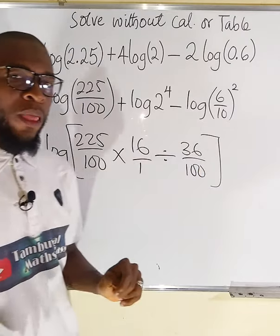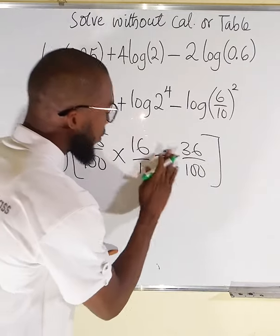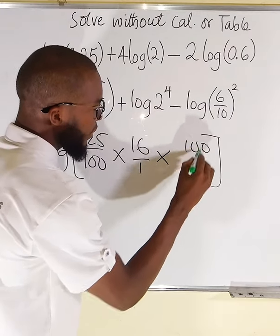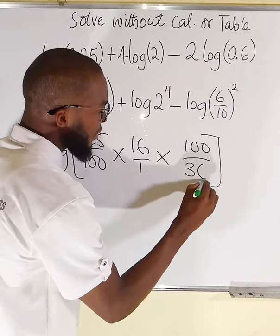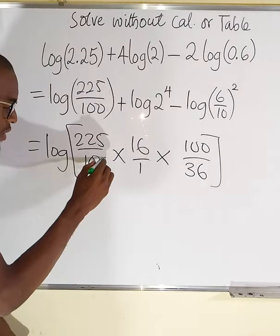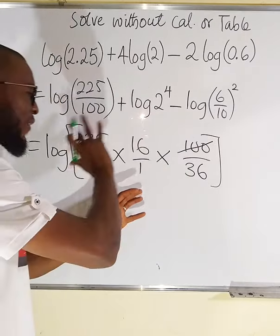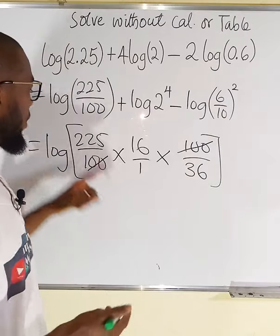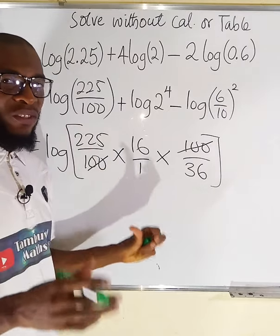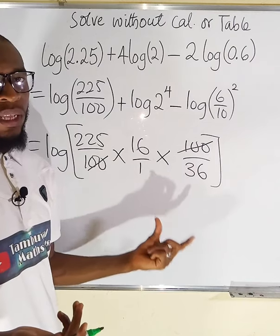But instead of this division we can change it to multiplication and take the reciprocal of this fraction. So we have multiplication, and instead of 36 over 100 we have 100 divided by 36. From here we have all multiplications. 100 can cancel this 100. What we have entirely under this bracket is 100. Why? Because 225 multiplied by 16 is 3600, and if you divide it by 36 you shall obtain 100.